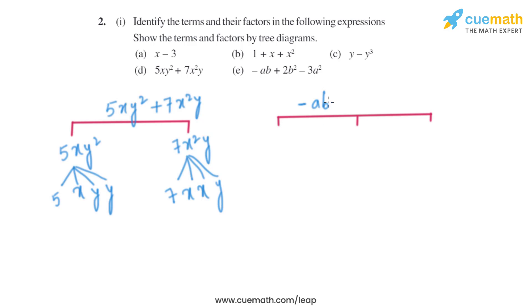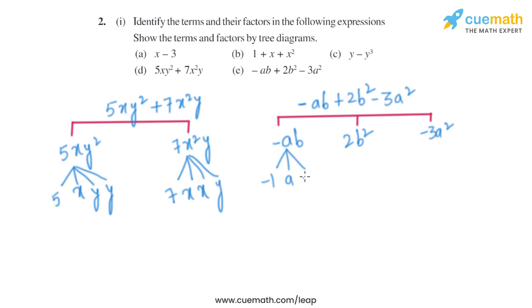Now let's move on to the last part. The expression given is minus AB plus 2B square minus 3A square. The terms are minus AB, 2B square, and minus 3A square. The factors of minus AB are minus 1, A, and B. The factors of 2B square are 2, B, and B. Similarly, for minus 3A square, it will be minus 3, A, and A.